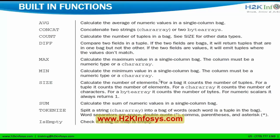Average will give you the average of all the values. Concatenation will concatenate one or more strings. Count is the normal count we had seen till now. Difference: suppose I have two tuples and I want to get the difference in each column of the tuple — if I give a difference command on both tuples, it will give you the difference between each matching key. I also have maximum, minimum, and tokenize. Tokenize is one of the important built-in functions, which I will explain in the next slide.